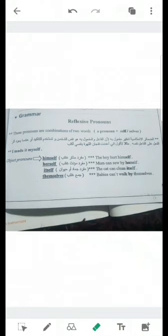A pronoun, domier, plus self للمفرد, selves للجمع. We have self مفرد, selves للجمع. طبعاً الضمائر الانعكاسية تعتبر مفعول به لأن الفاعل والمفعول به هو نفس الشخص وتستخدم للتأكيد أو عندما يعود أثر هذا الفعل على الفاعل نفسه. مثلاً لأقول أنني أعددت فنجان القهوة بنفسي. I made it myself.